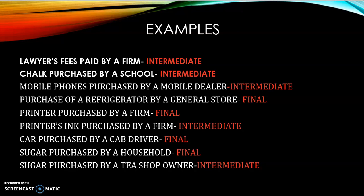Chalk purchased by a school is intermediate expenditure, because it is used up in the process of giving education services — so intermediate. Mobile phone purchased by a mobile dealer is for further sale, so it is considered intermediate and not added in the national income.